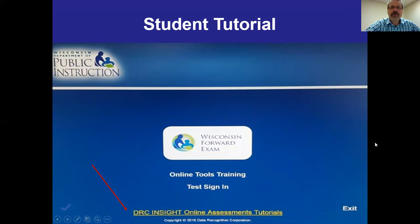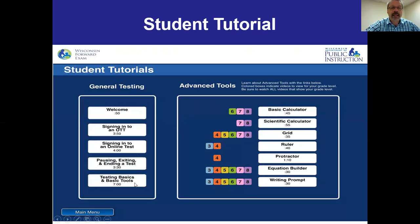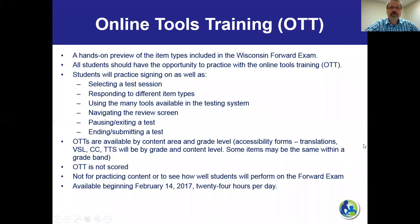Here's where you would find them. Go to the online tools training and click on the yellow text at the bottom. You'll find videos with approximate durations listed. These are appropriate for all students. You can also see tools specific to particular grades — for instance, fourth grade students will have a protractor available to them in mathematics, and that particular video is one minute and ten seconds. Students should be able to get their hands on this at some point, especially third graders or new students who have never taken the Forward Exam before.